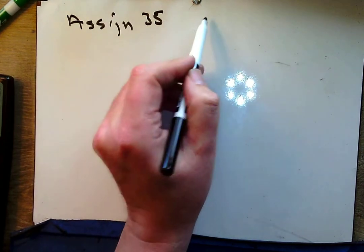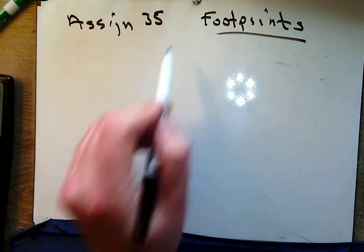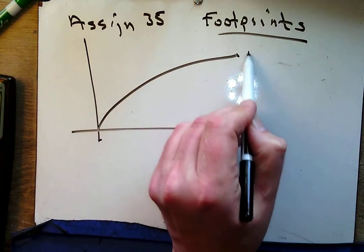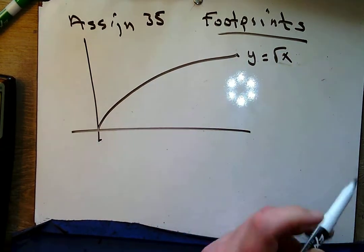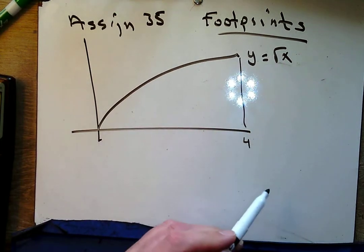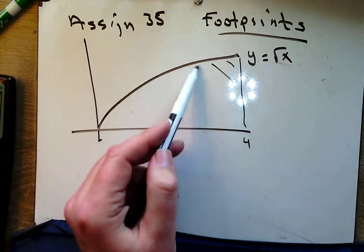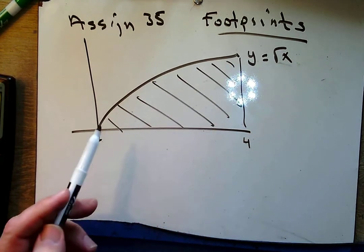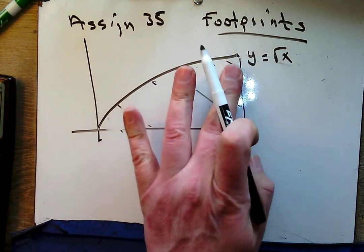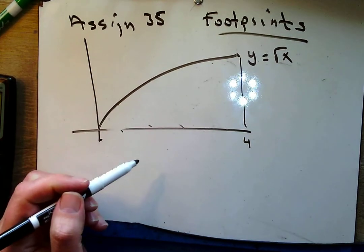Assignment 35 — we're going to have volumes that are footprints. What do I mean by footprints? Let's imagine you've got the function y equals square root of x, and we're going from 0 to 4. There are lots of things we could do with this footprint, but what I want to do with this footprint is actually have it be the footprint for something I want to build.